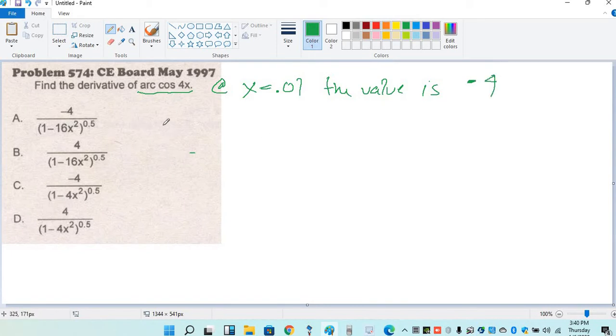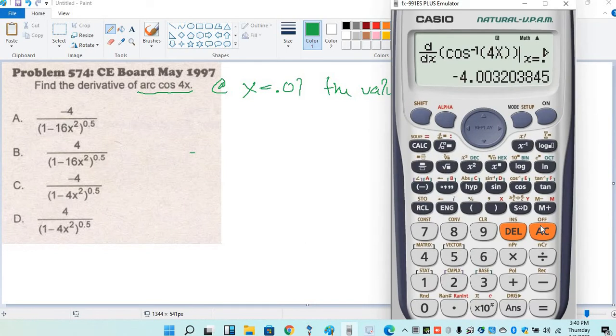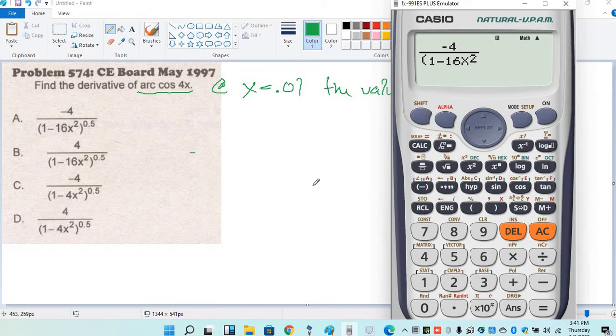In the options, we will use the calc function of the calculator. Input the equation, let's say option A: negative 4 quantity 1 minus 16x squared raised to 0.5.